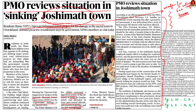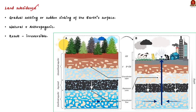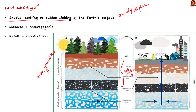In this discussion, we will learn about what is land subsidence and its causes. Land subsidence is defined as a gradual settling or sudden sinking of earth's surface due to removal or displacement of subsurface earth materials. The term subsurface refers to the area below the surface of the earth. Materials found below the surface include rocks, groundwater, and minerals. If these materials are displaced or removed, it leads to land subsidence.